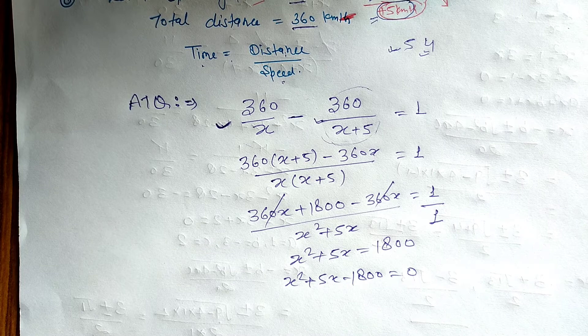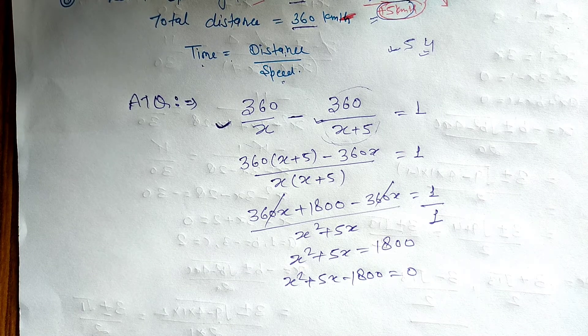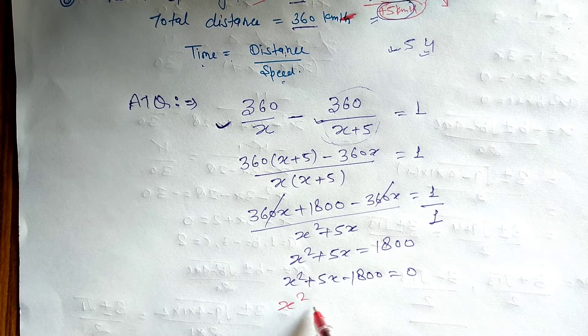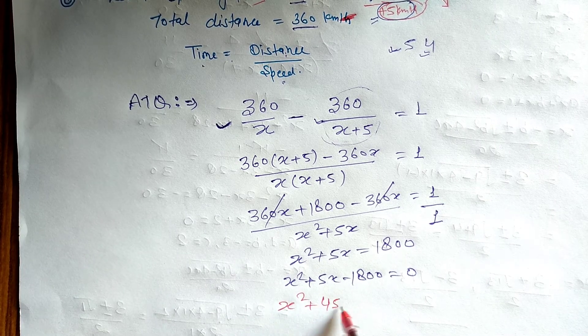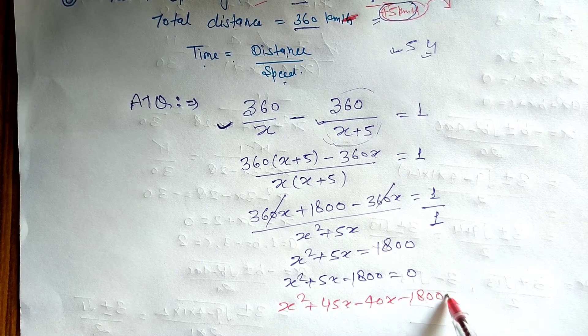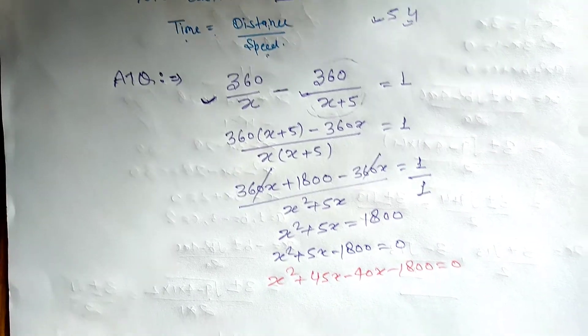Now we have quadratic equation, we have to do factors. So I have to do factors in the rough. Factors: x square plus 45x minus 40x minus 1800 equal to 0. You have to do factors.